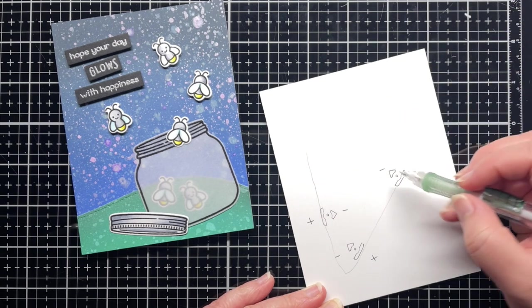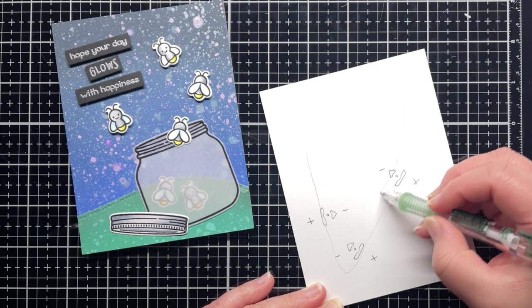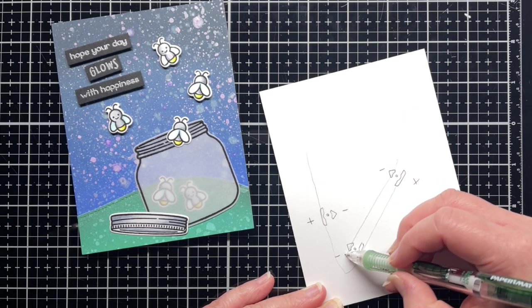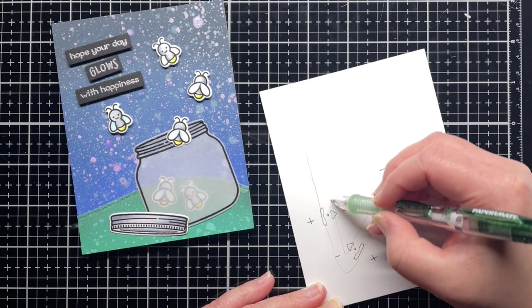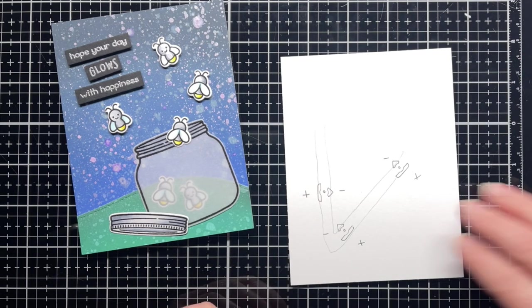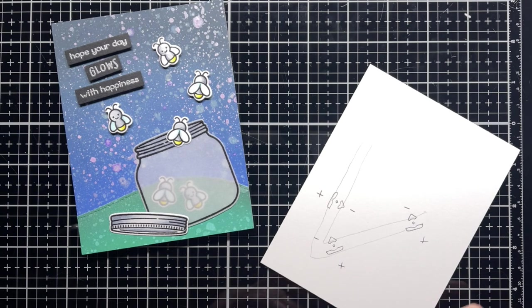Hopefully now you can understand why I said to keep the positive side of the traced outline closest to the outer edges. If my last traced outline was flipped, then I wouldn't be able to complete my circuit without crossing my tape lines, which would then break the circuit.